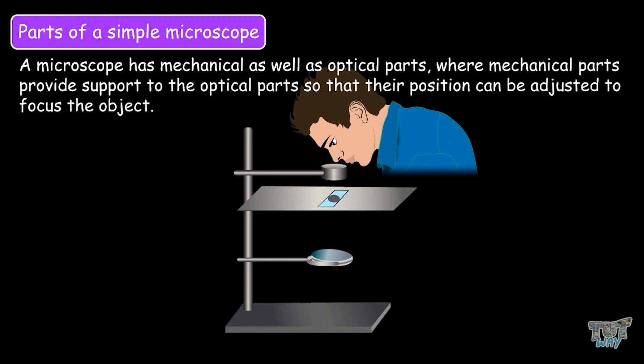A microscope has mechanical as well as optical parts, where mechanical parts provide support to optical parts so that their position can be adjusted to focus the object.